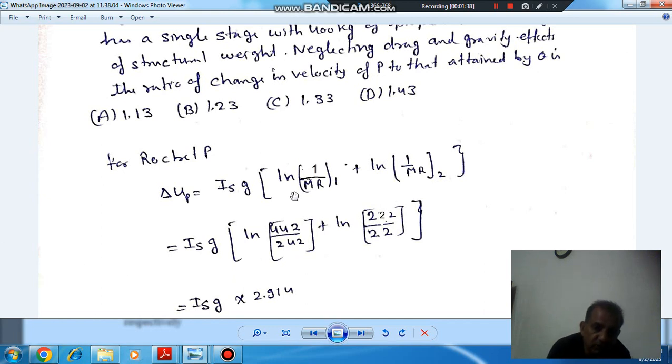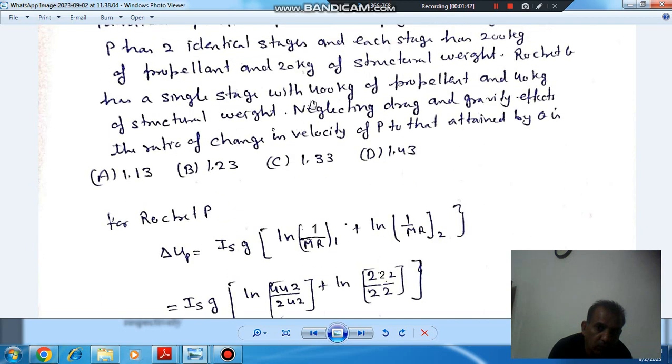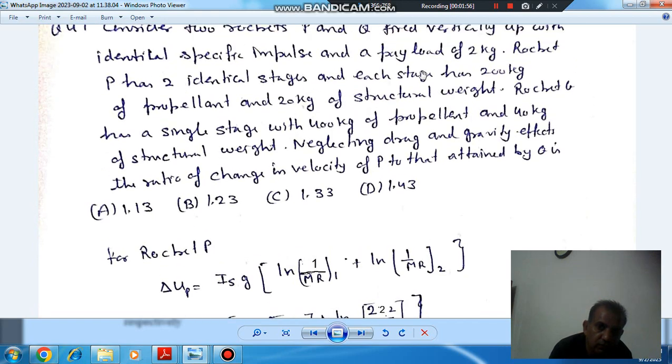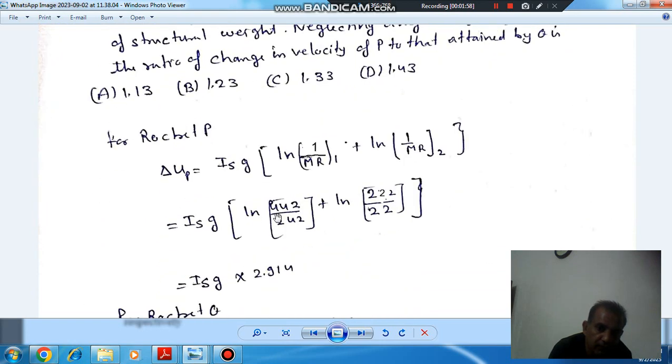So mass ratio for the first stage: initially we have all the mass from both stages - that is 400 kg propellant, 40 kg structural weight (20 and 20), plus 2 kg payload, totaling 442 kg. After completion of first stage, only propellant is consumed, so final mass after completion of first stage will be 242 kg.